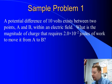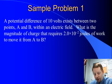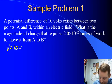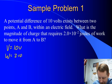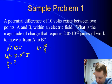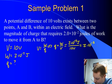Let's take a look at an example. A potential difference of 10 volts exists between two points A and B within an electric field. What is the magnitude of the charge that requires 2 times 10 to the minus 2 joules of work to move it from A to B? We're given V equals 10 volts and W equals 2 times 10 to the minus 2 joules, and we're looking for charge. Using V equals W over Q, charge equals W over V, which gives us 2 times 10 to the minus 2 joules over 10 volts, or 2 times 10 to the minus 3 coulombs.